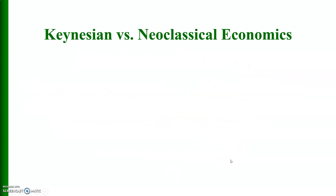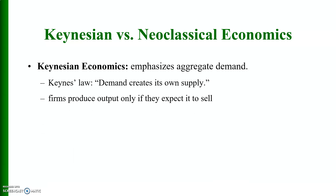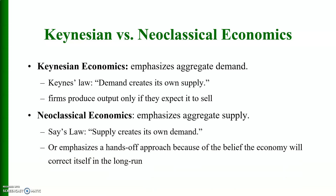Starting with the basic introduction of Keynesian versus Neoclassical economics: Keynesian economics emphasizes aggregate demand and follows Keynes' Law that demand creates its own supply, and firms produce output only if they expect to sell. In comparison, Neoclassical economics emphasizes aggregate supply and their basic tenet is Say's Law of markets — supply creates its own demand — and it emphasizes a hands-off approach because of the belief that the economy will correct itself in the long run.